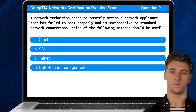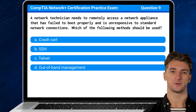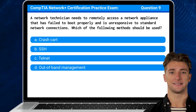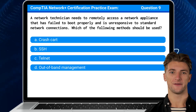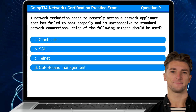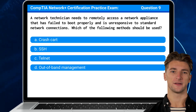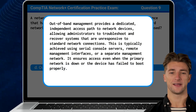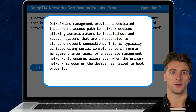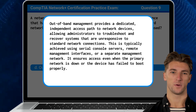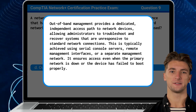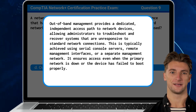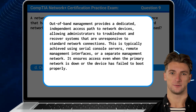Question 9. A network technician needs to remotely access a network appliance that has failed to boot properly and is unresponsive to standard network connections. Which of the following methods should be used? The answer is D: Out-of-band management. Out-of-band management provides a dedicated, independent access path to network devices, allowing administrators to troubleshoot and recover systems that are unresponsive to standard network connections. This is typically achieved using serial console servers, remote management interfaces, or a separate management network. It ensures access even when the primary network is down or the device has failed to boot properly.